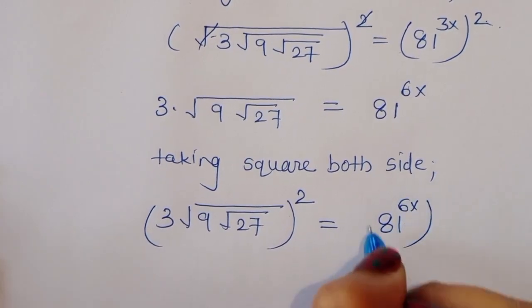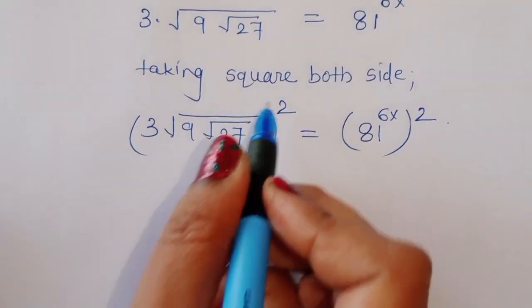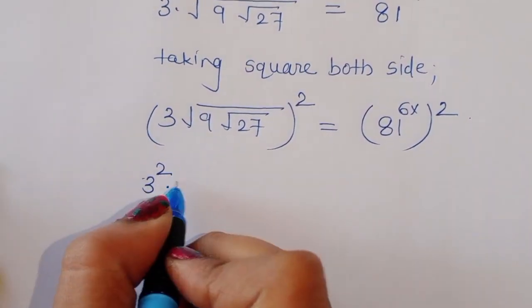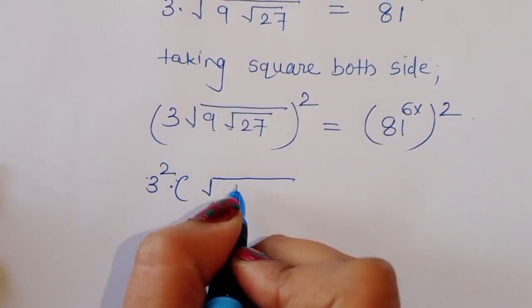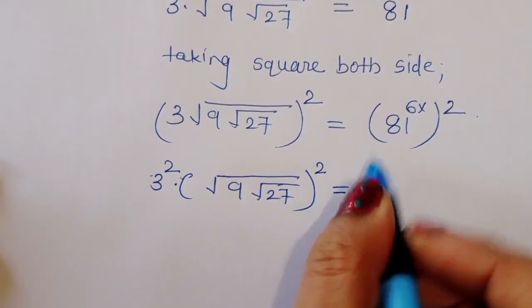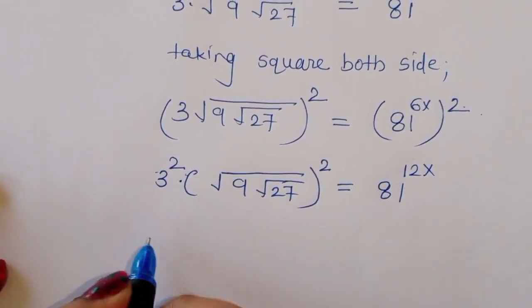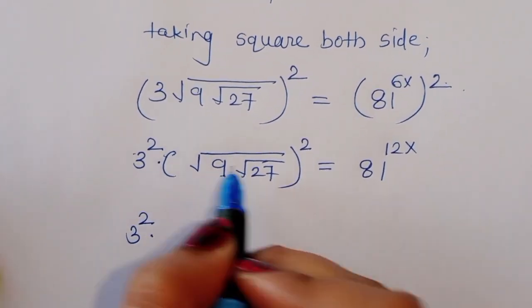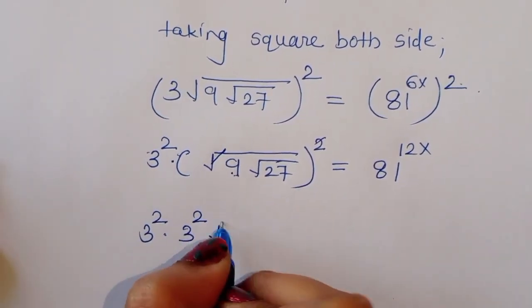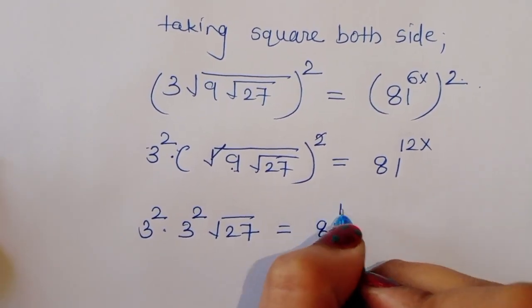Again taking square on both sides, we get: 3 times square root of 9 times square root of 27, whole squared, is equal to 81 raised to 12x. We can write 3 squared times square root of 9 — now 9 we can write as 3 squared — times square root of 27 is equal to 81 raised to 12x.